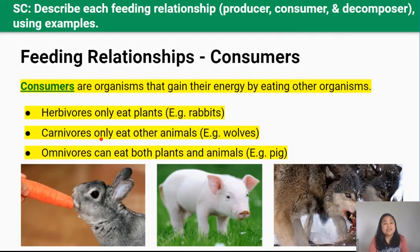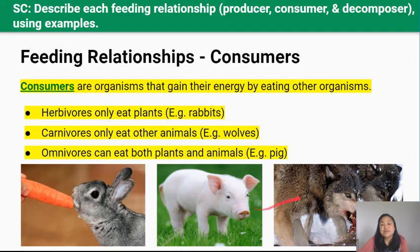Organisms that eat other organisms are called consumers. There are herbivores, which are animals that only eat plants, like this rabbit over here eating a carrot. There are carnivores, which are animals that only eat other animals — for example, this wolf here that's eating on a carcass of some other animal. And then there are omnivores, which are animals that can eat both plants and animals, like this pig here — it can eat food scraps like chicken, but it can also eat plant scraps like lettuce.